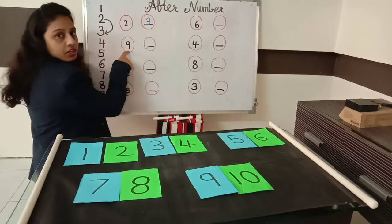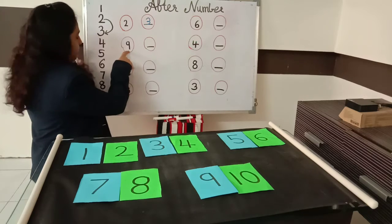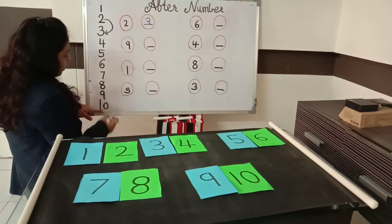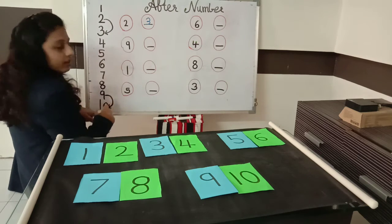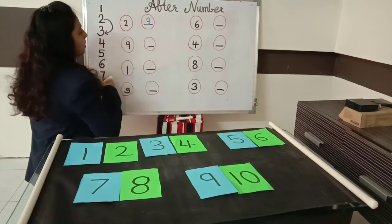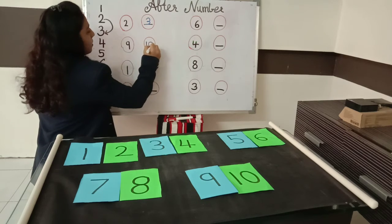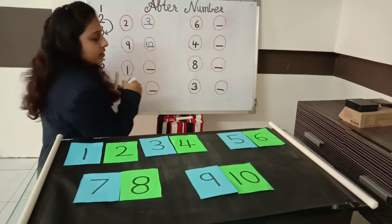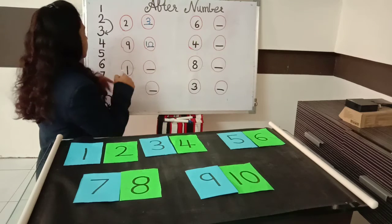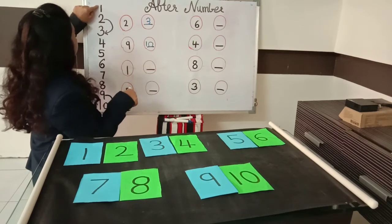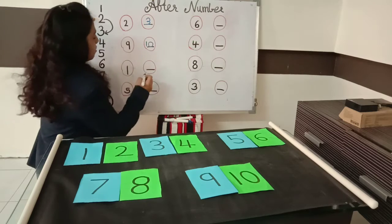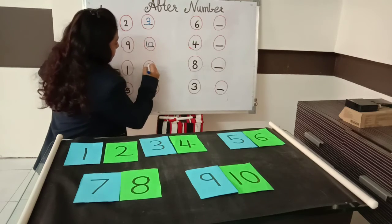Now which number is this? 9 number. There is 9 number here. What comes after 9? 10 number. So we will write number 10. And done. 1, 0 — 10. Now see, which number is this? 1 number. 1 after what comes? After 1 comes 2. So we will write number 2.